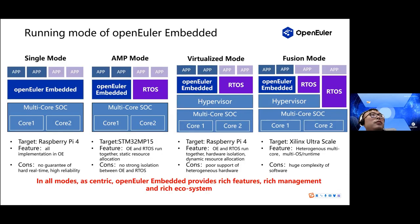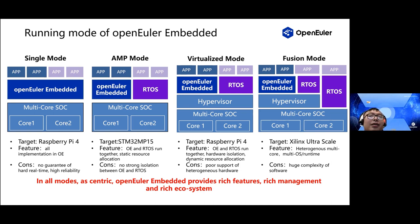We define four running models for OpenEuler Embedded. Number one is the single model — the most typical usage of embedded Linux, with Raspberry Pi 4 as an example target. In this model, all features are implemented above Linux, providing rich features and rich ecosystems. However, there are no guarantees for hard real-time, safety, or low power, because the Linux kernel is not designed for these goals. The second model is the AMP model — Asymmetric Multi-Processor — where OpenEuler Embedded Linux and RTOS run together, system resources are statically allocated, and it supports heterogeneous architecture, with an STMicro hardware example having two Cortex-A7 cores and one Cortex-M microcontroller.